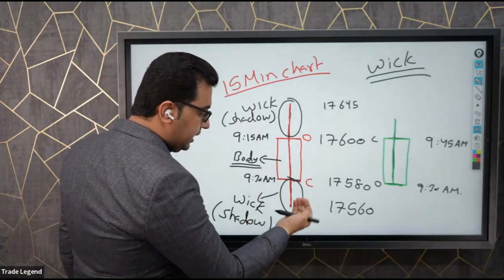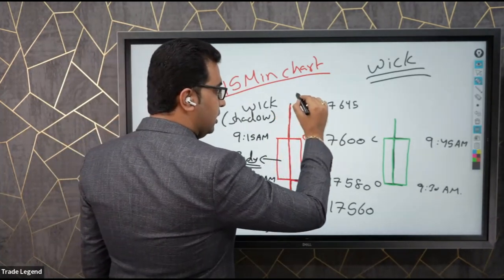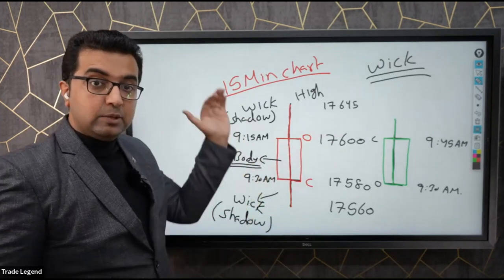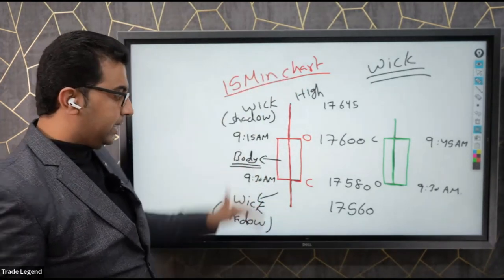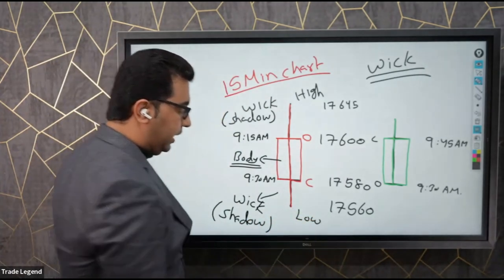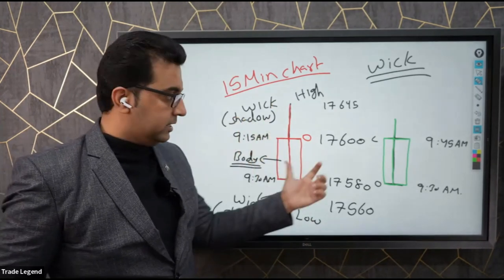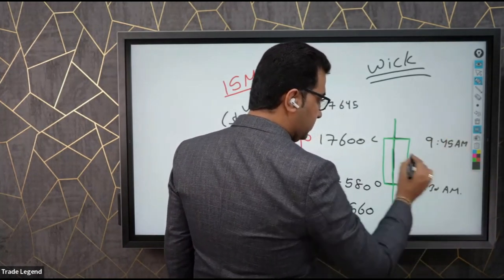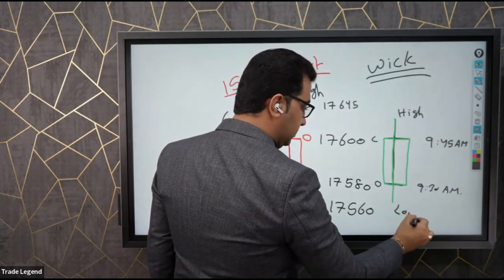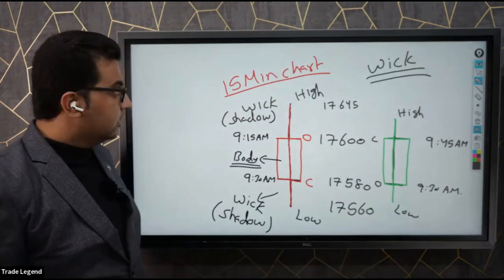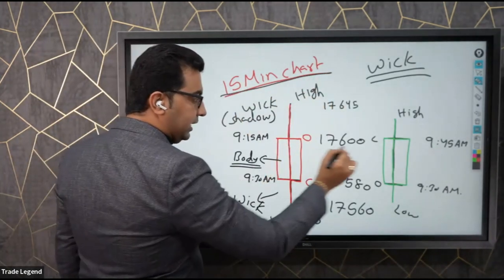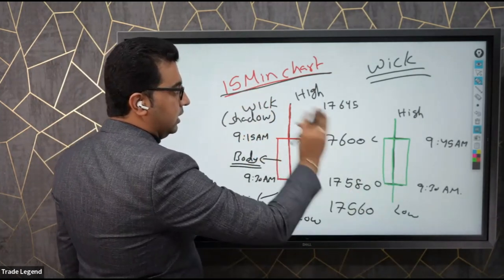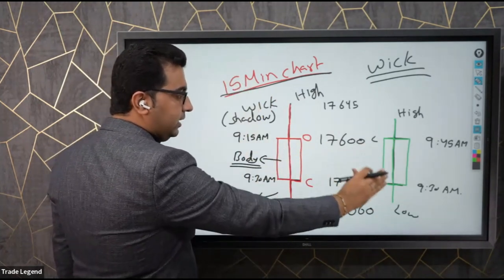This candle's highest point is the high price. So a candle has four values: opening price, closing price, low price, and high price. Similarly, a green color candle also has high, low, opening price, and closing price. If it's a 15-minute chart, the candle represents 15 minutes. If a 5-minute chart, 5 minutes. If a 1-day chart, one day.